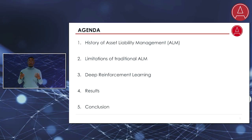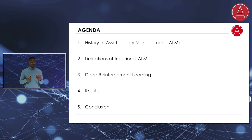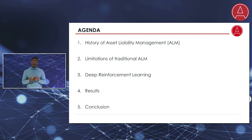Our journey today will begin with a brief history of ALM. We'll move over to the current traditional ways of doing ALM and their limitations. The meat of our discussion will be on the deep reinforcement learning technique, its benefits, how to implement it, and the building blocks of that machine learning approach. We'll look at some key results and analyze how they compare to the traditional way of doing things, and we'll end with some concluding thoughts.